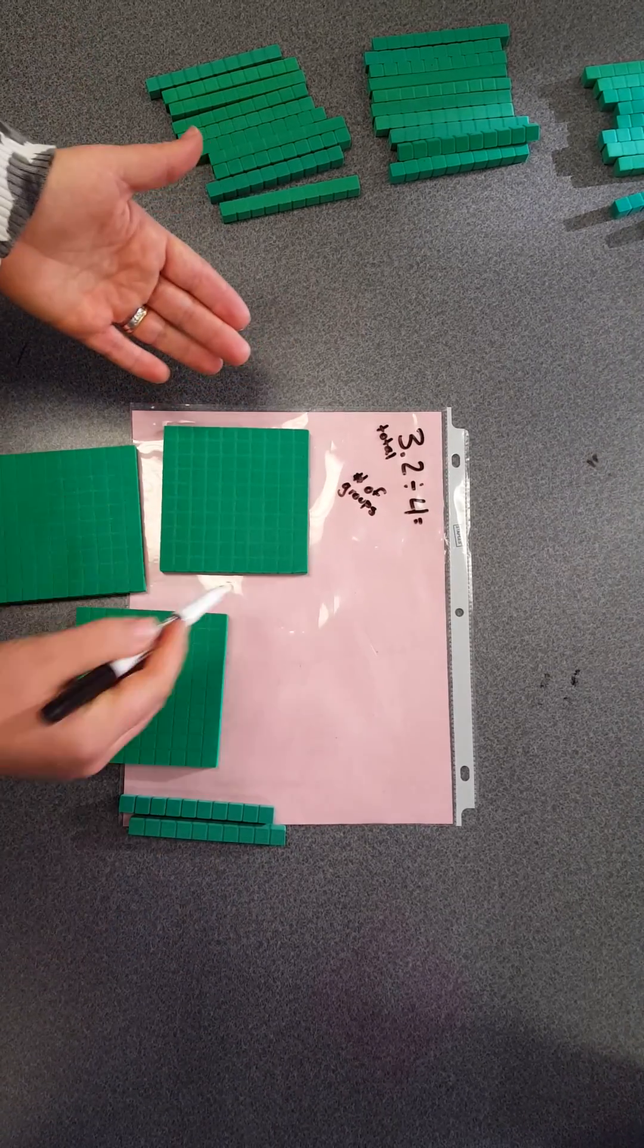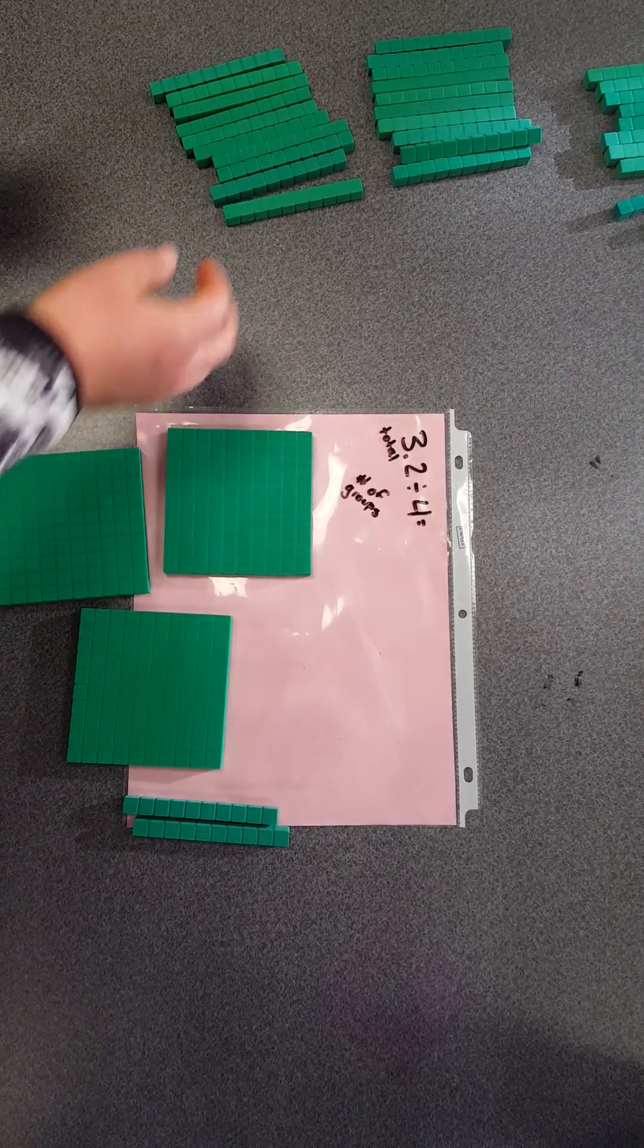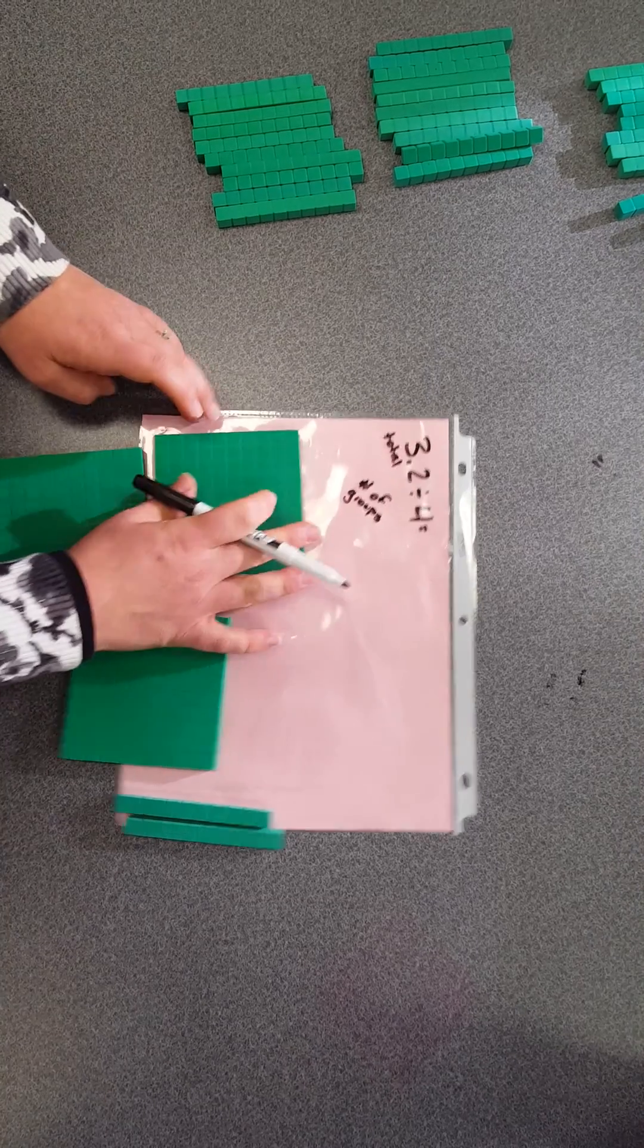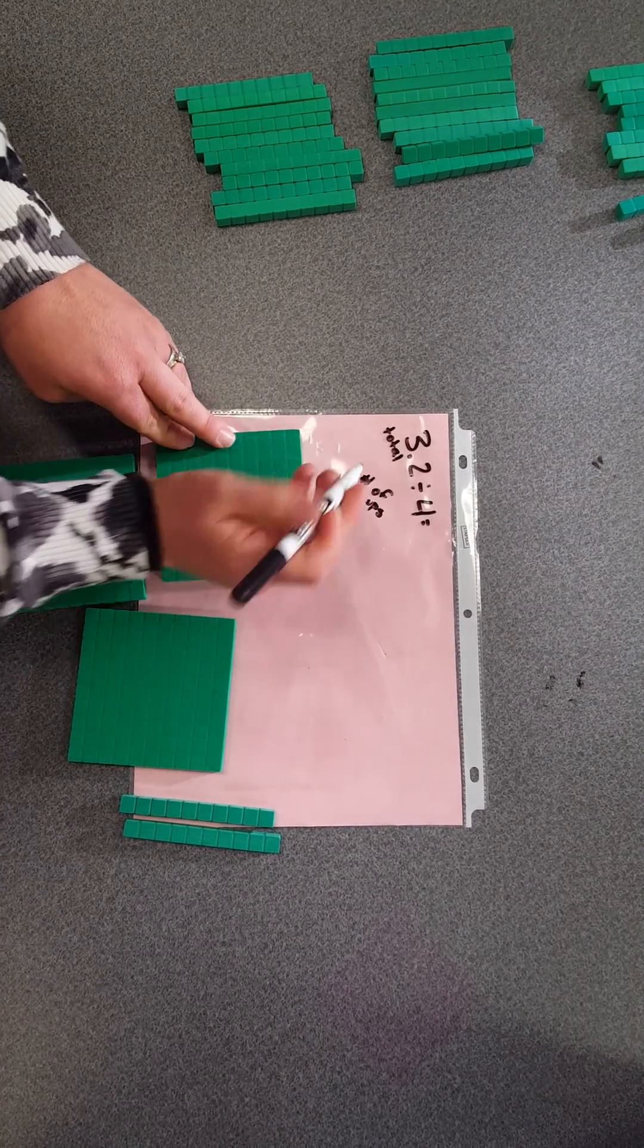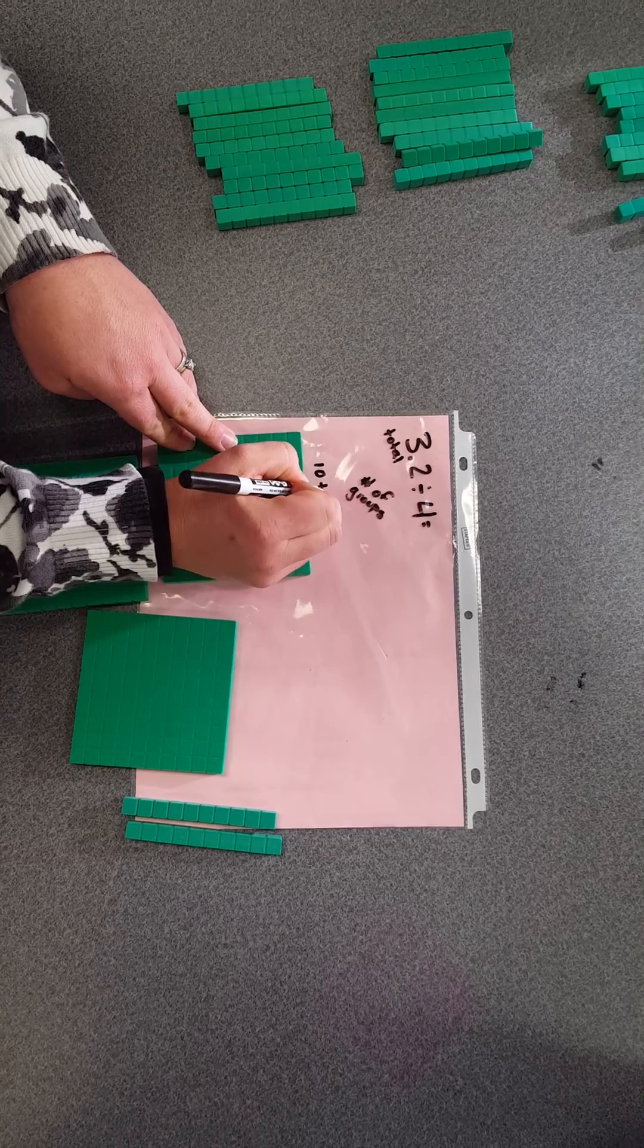But I can't take my 3 and divide it into 4 groups easily. So I'm going to have to do the same thing, remembering that 1 whole is equal to 10 tenths again.